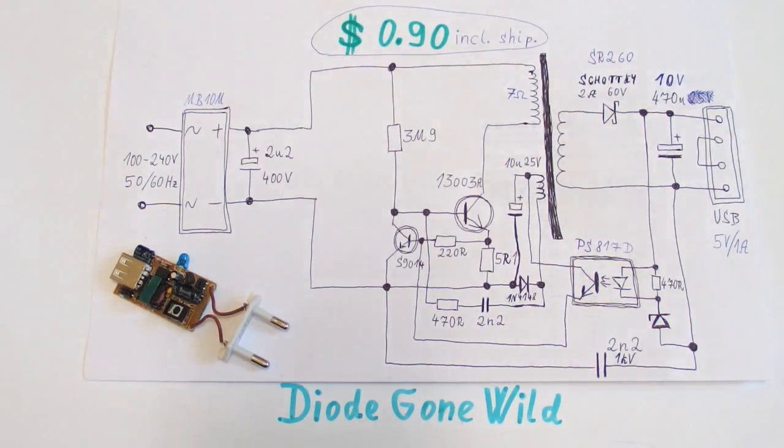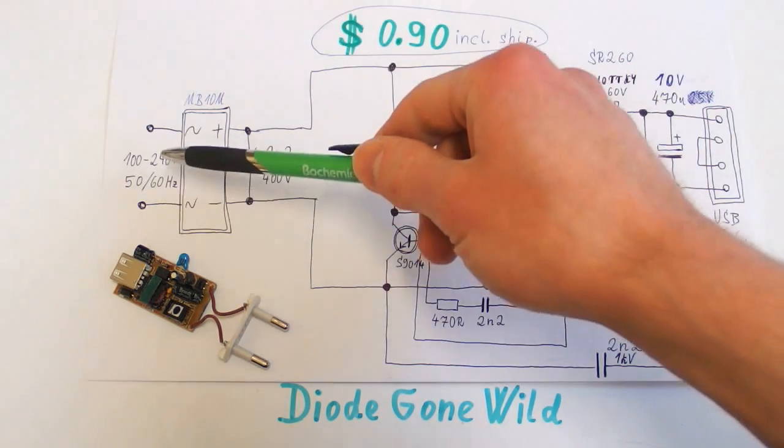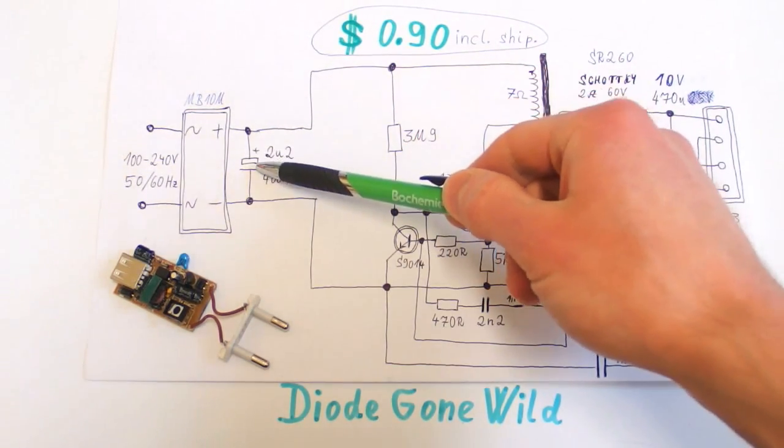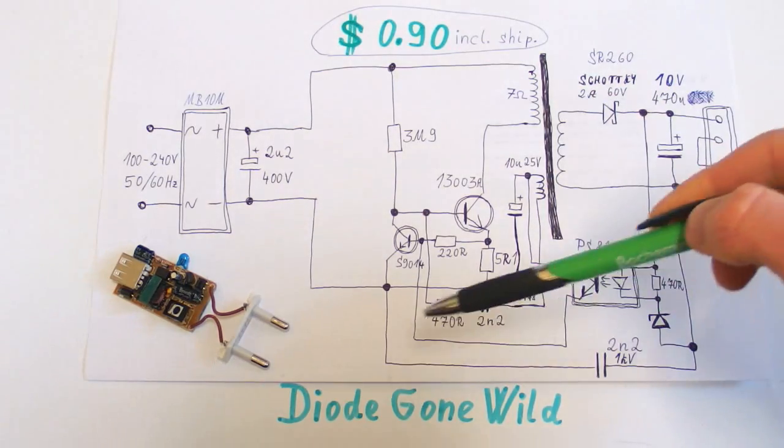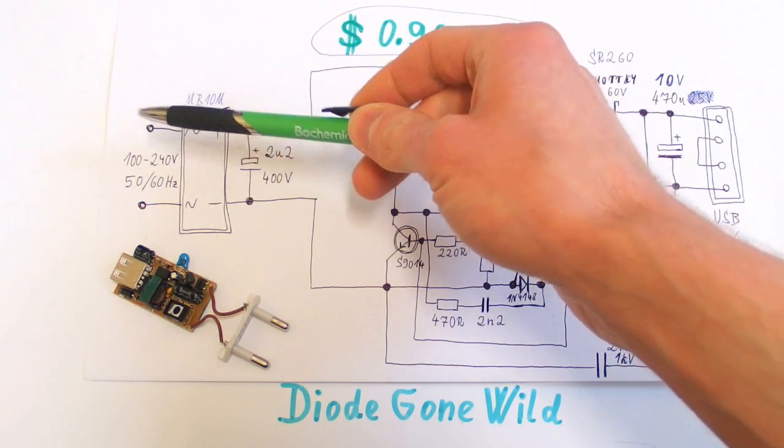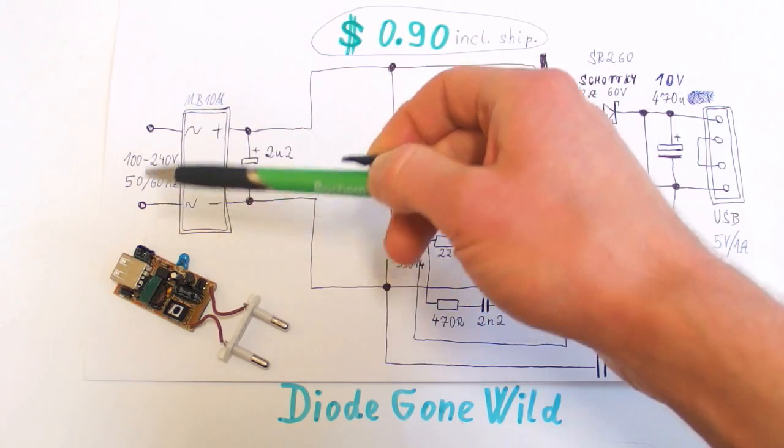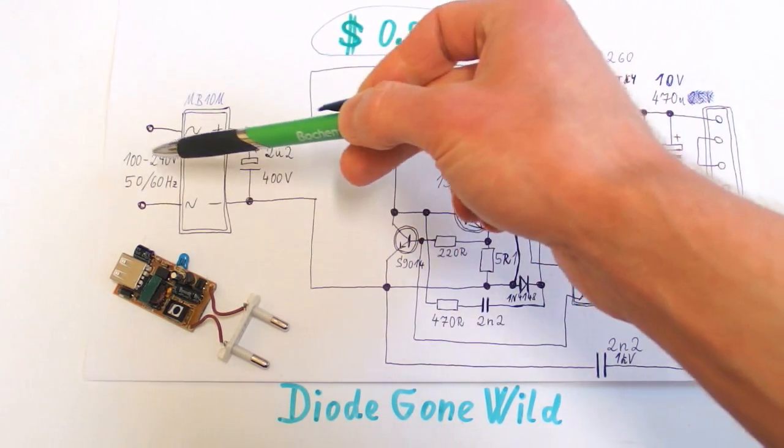So I have made a schematic of it and it looks really horrible. There's just the mains, bridge rectifier and filter capacitor and the rest of the circuitry. There is no fuse, no fusible resistor, no interference filter, nothing. Just mains, bridge, capacitor.